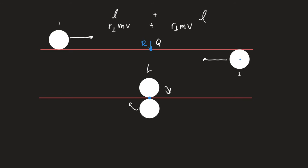After the two discs stick together, they rotate about the center of mass. The moment of inertia of each disc needs the parallel axis theorem since they're spinning about their edge, not their center. So I times omega — but I must be adjusted to be about the edge of the disc. I told you everything you need to do to work the problem — you can do the rest.